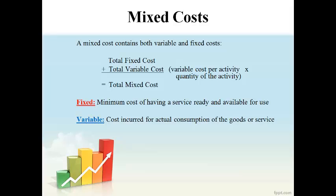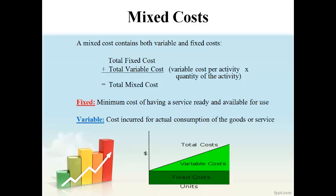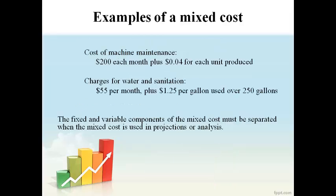There are times when a cost does not stay the same in total and also does not stay the same per unit when volume changes. These costs are mixed costs. A portion of the cost is fixed and a portion is variable. As volume increases, the total variable part of the cost increases, increasing the total cost. A good example of a mixed cost is machine maintenance, where some maintenance is done routinely and some is done when the machine breaks down. In this example, the company plans to spend $200 each month in routine maintenance and estimates it will cost 4 cents for each unit produced when the machine breaks down. Water and sanitation is another example of a mixed cost — the city bills a set amount and additional amounts for each gallon used over the set amount.